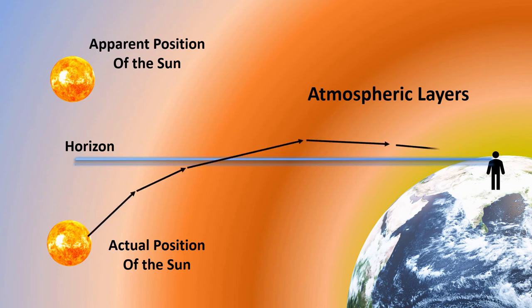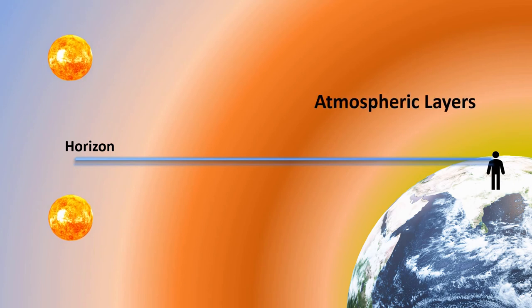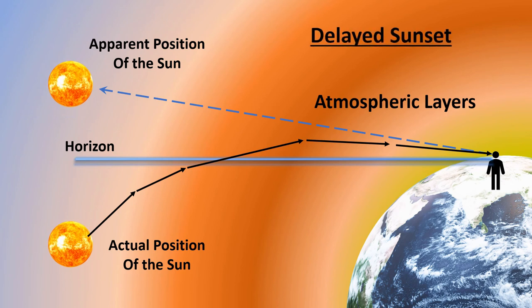Refraction is particularly stronger during the morning and evening time when the sun's rays are slant. Even though the actual sun is below the horizon, its apparent image would appear above the horizon due to refraction. It's kind of a mirage that we'll experience on hot summer days in a desert. So you will experience an advanced sunrise and a delayed sunset if you are near the equator.